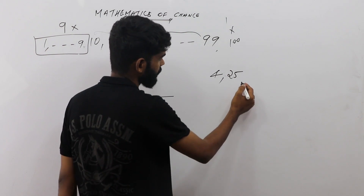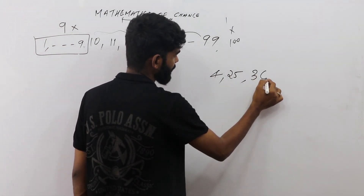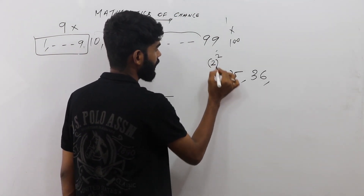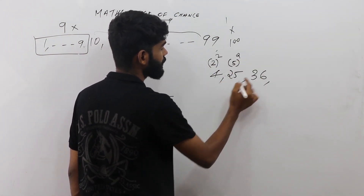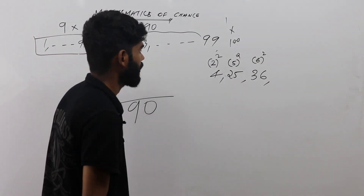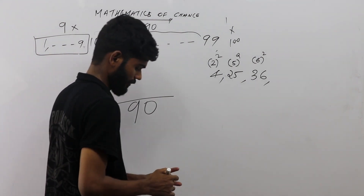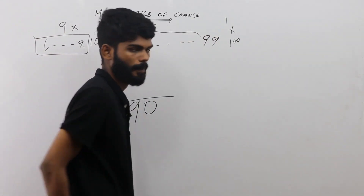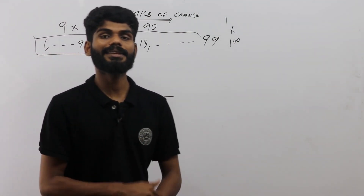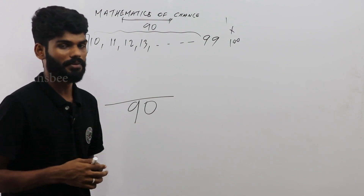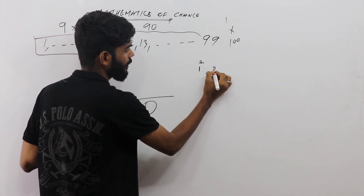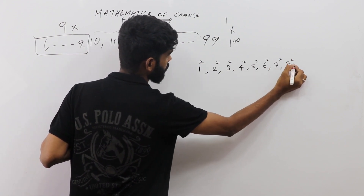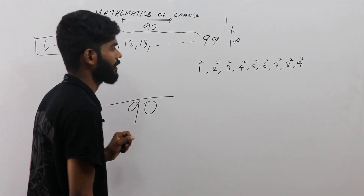Now we list the perfect squares that are 2-digit numbers. We compute: 4²=16, 5²=25, 6²=36, 7²=49, 8²=64, 9²=81. Note that 1²=1, 2²=4, and 3²=9 are single-digit, and 10²=100 is three digits, so they don't count.